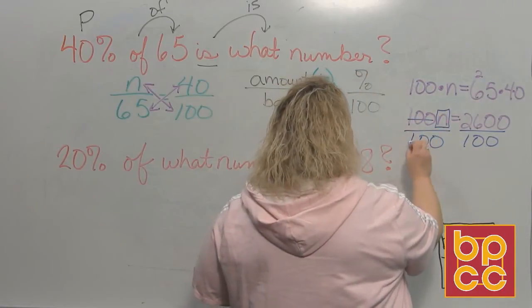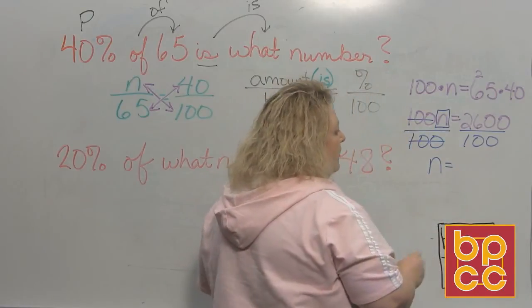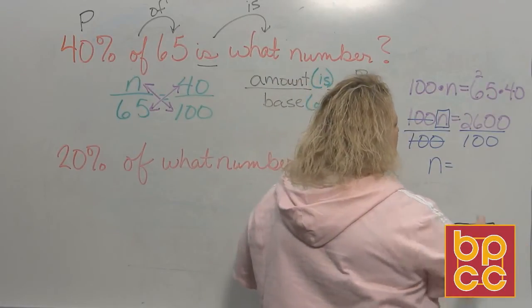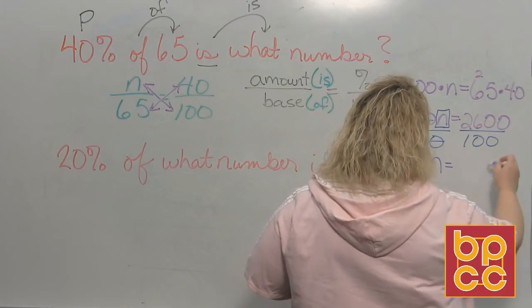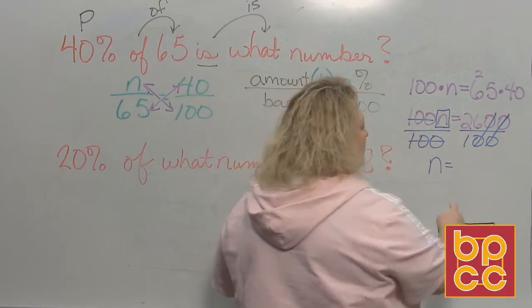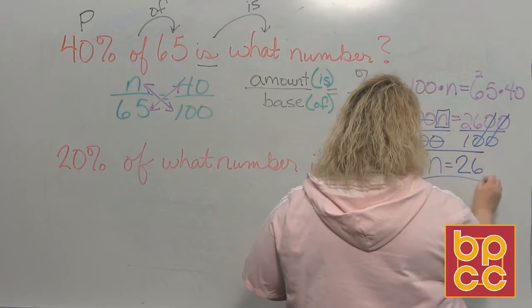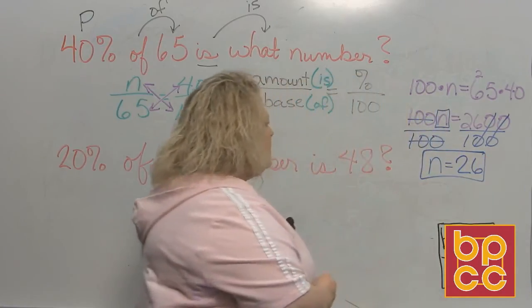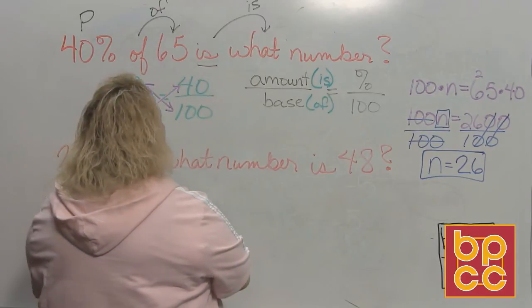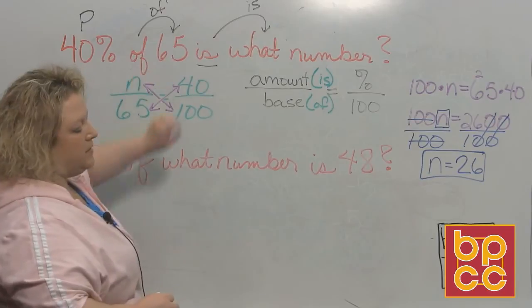Now in a previous video, we talked about shortcuts dividing by 100, dividing by 1000. And you will notice when you divide by 100, they both have two zeros. So you can just cross those off and it'll be a short trip. And you get 26. So the answer to this question is 26 is 40% of 65.